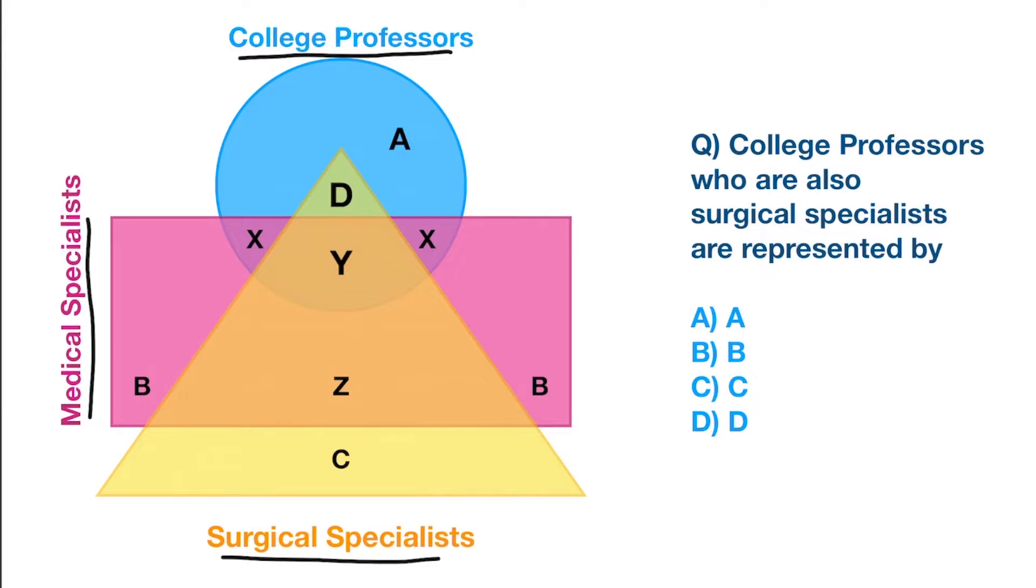which represent the different shades in the diagram. Something like if you look at Y. Y is a common region for the college professors, the medical specialist, even the surgical specialist. Then look at X. X is common for college professors and medical specialist. But it is not combined with surgical specialist. So that's how we identify based on the overlap. We can find out what the data represents. Now let's solve this question.